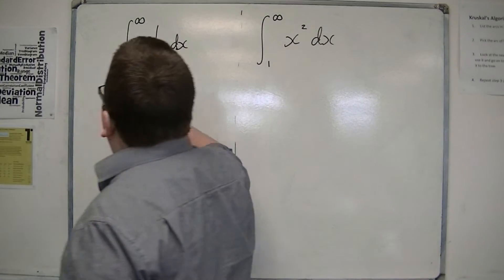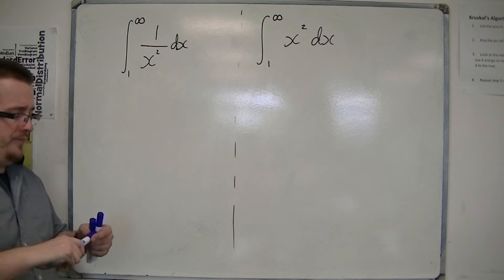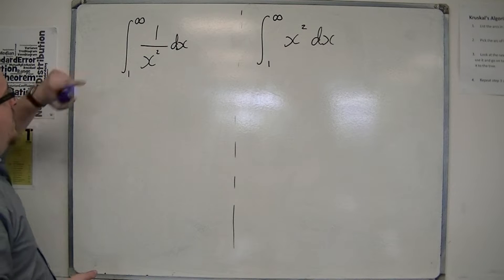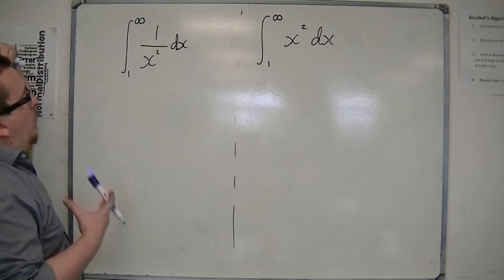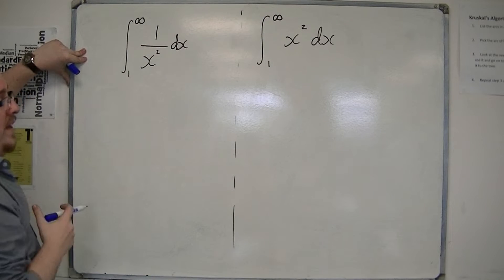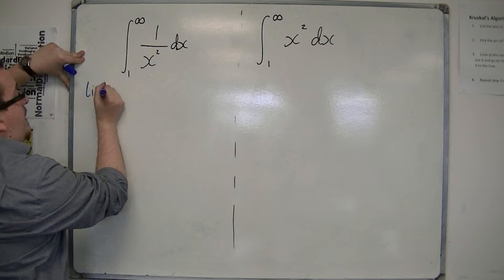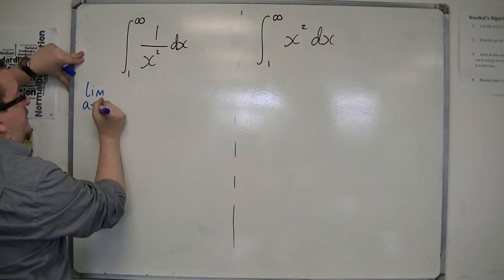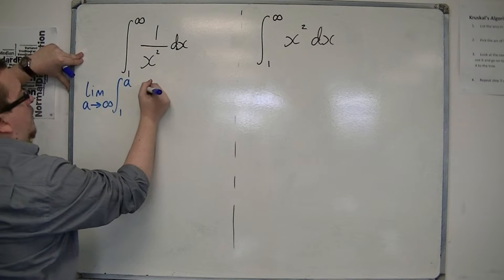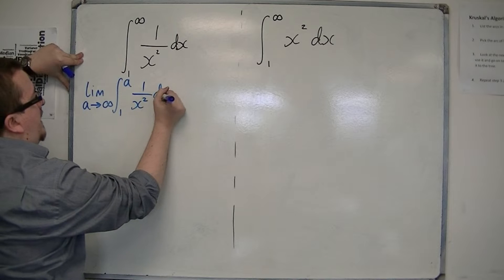The first one I'm going to show you is 1 to infinity of 1 over x squared dx. Because we can't evaluate at infinity, what I'm instead going to do is replace that with a letter — I'm going to replace it with 'a' — and say that we're going to take the limit as a tends to infinity of 1 to a of 1 over x squared dx.